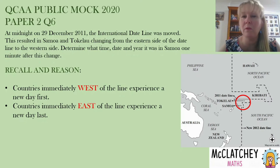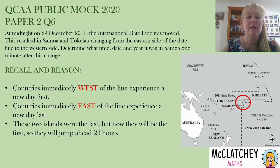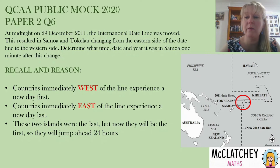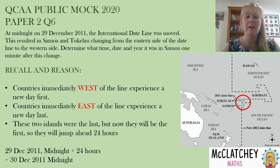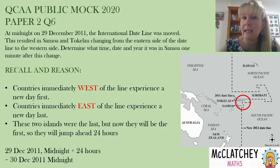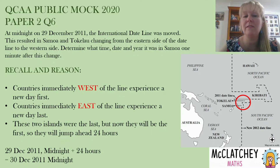It's important to understand what's happening with the dateline. They were last and now they're going to jump ahead exactly 24 hours because that line is going to move around them. So if we start with where they were — 29th of December 2011 at midnight — and we add 24 hours, the moment they moved from one side of the dateline to the other, at that same instant it's now the 30th of December 2011 at midnight.